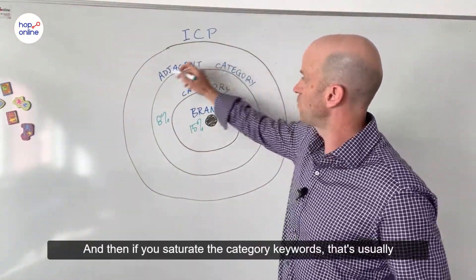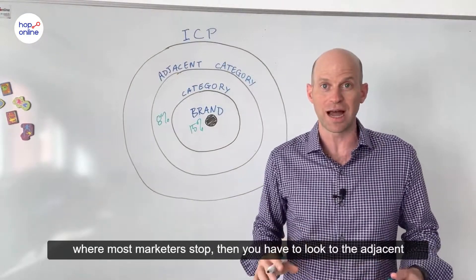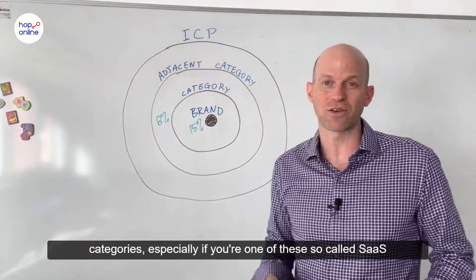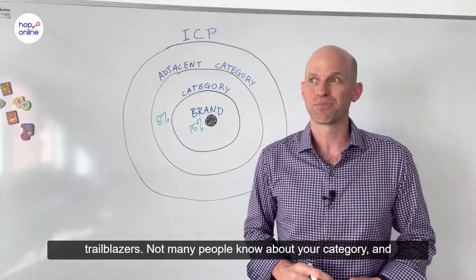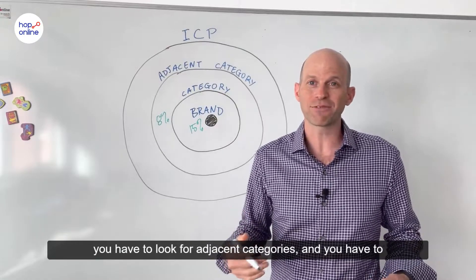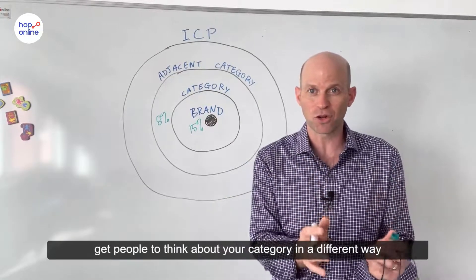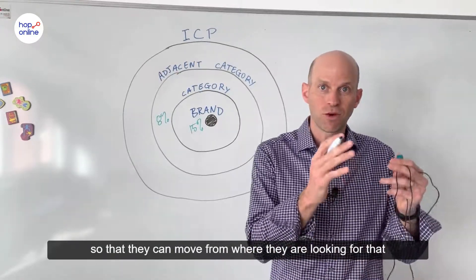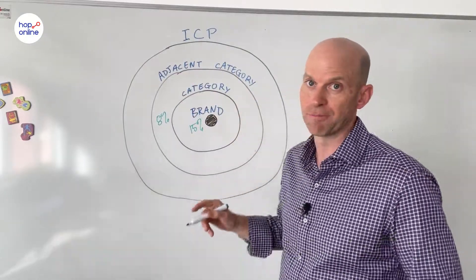And then if you saturate the category keywords — that's usually where most marketers stop — then you have to look to the adjacent categories, especially if you're one of these so-called SaaS trailblazers. Not many people know about your category, and you have to look for adjacent categories and get people to think about your category in a different way so they can move from where they are to your adjacent category.